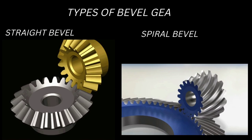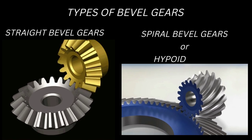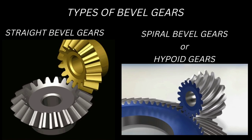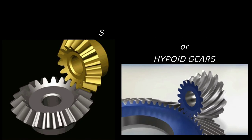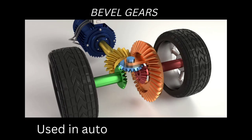Types of bevel gears are straight bevel gears, spiral bevel gears, and hypoid gears. Bevel gears are used in automobile differentials.